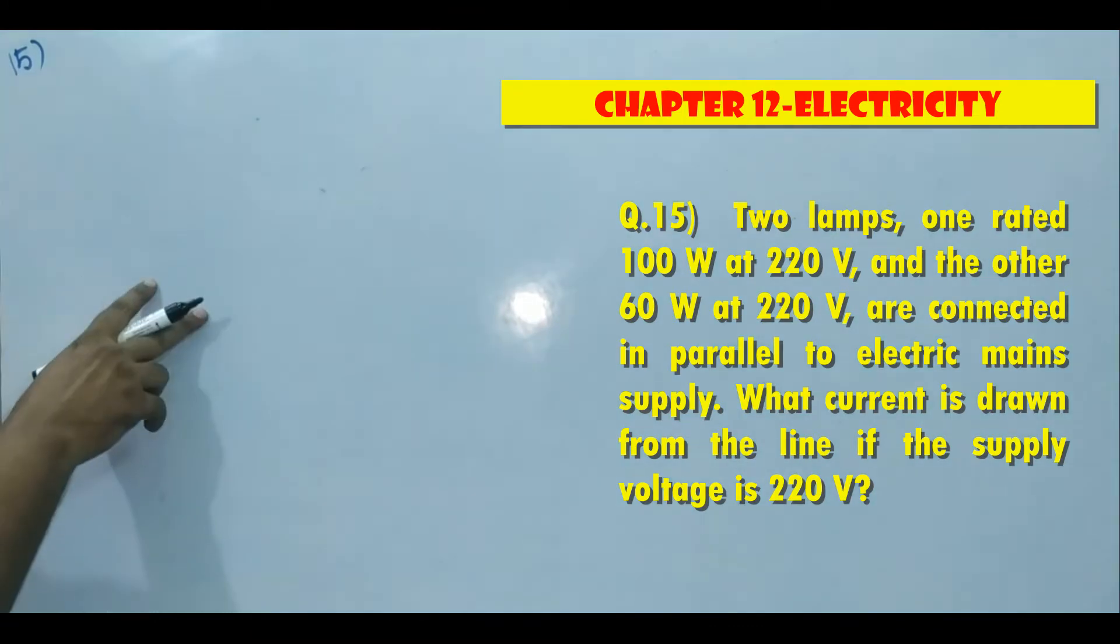They are giving two bulbs. One bulb is 100 watt, another one is 60 watt, both connected in 220 volt power supply. If they connected in 220 volt power supply, what is the current drawn from the two bulbs they are asking.